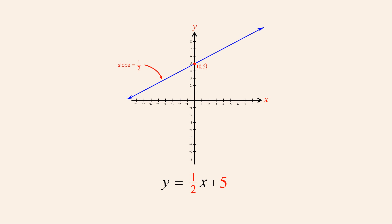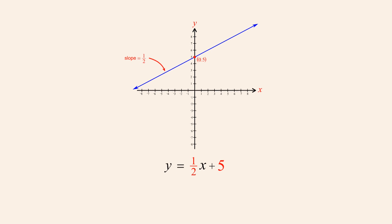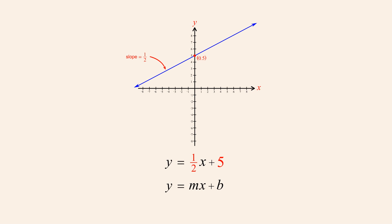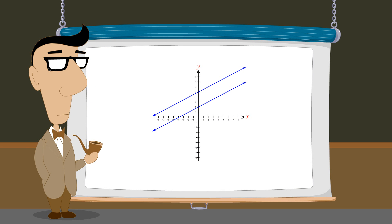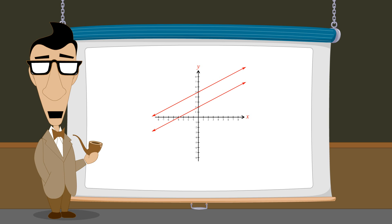If we write a second equation in slope-intercept form which uses the same value for m but a different y-intercept, both lines described by these equations will have the same slope but no points in common. We say that these two lines are parallel to each other. Parallel lines have identical slopes but no points in common. As a result, parallel lines on a flat plane never intersect.